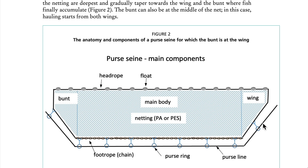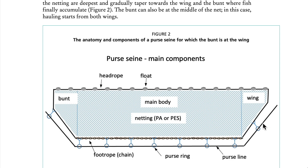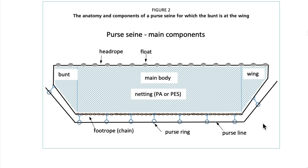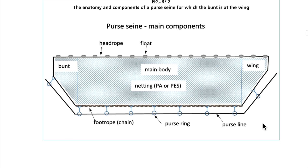The bunt can also be at the middle of the net; in this case, hauling starts from both wings. Please see Figure 2 for the anatomy and components of a purse seine for which the bunt is at the wing. Components include: the head rope, floats, bunt at the wing, netting (polyamide or polyester), foot rope with chain, purse rings, and the purse line.